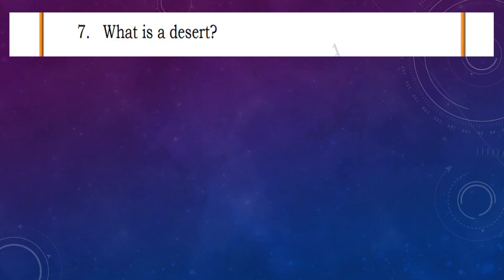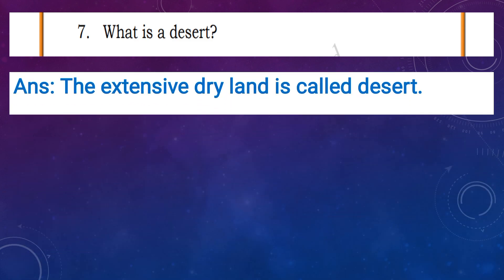Question number 7, what is a desert? Answer: the extensive dry land is called a desert.